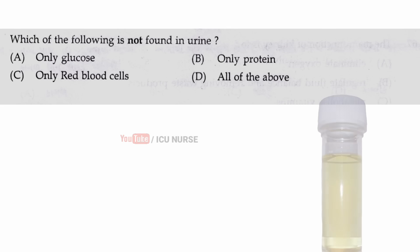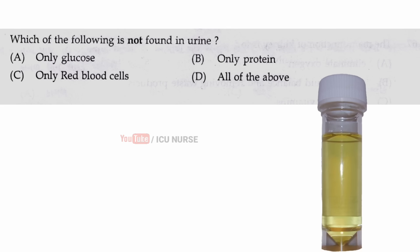Which of the following is not found in urine? The correct answer is D, all of the above. Glucose, red blood cells, and proteins are not normally found in urine.